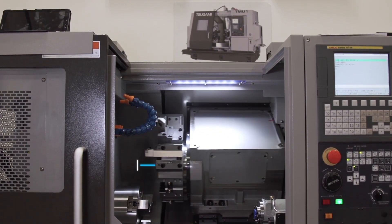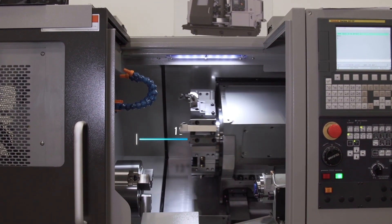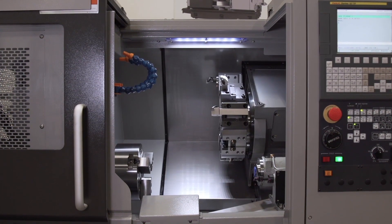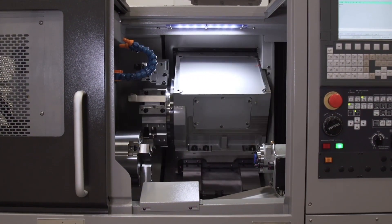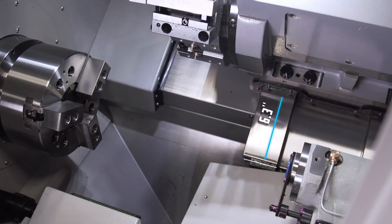The M08J gives you 13 inches of Z-axis travel and a maximum Z-axis rapid rate of 1,063 inches per minute. The X-axis provides 6.3 inches of travel and an X-axis rapid rate of 945 inches per minute.